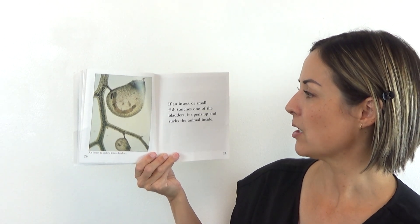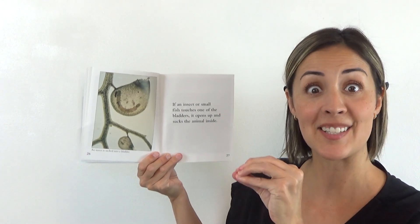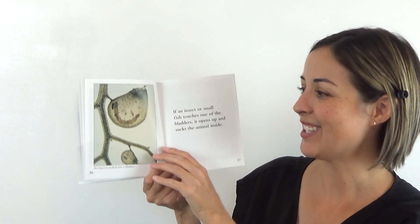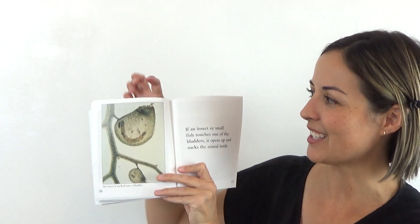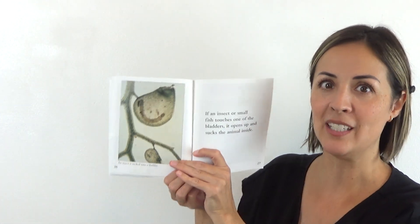If an insect or small fish touches one of the bladders, it opens up and sucks the animal inside. And look, we can see this says an insect has been sucked into the bladder and we can't even really tell what kind of insect it is anymore because it's been eaten.